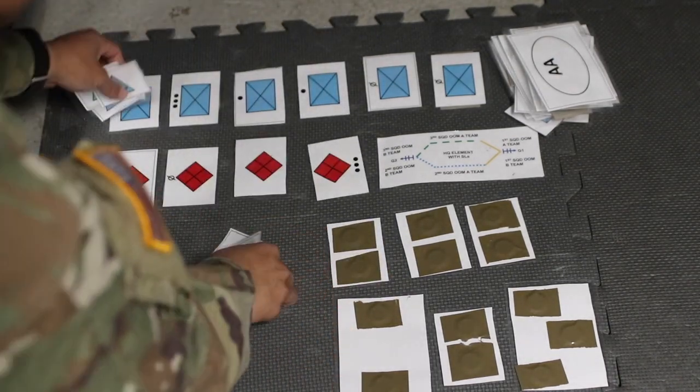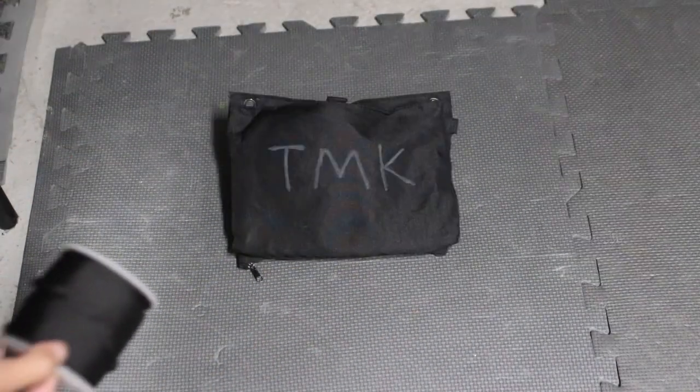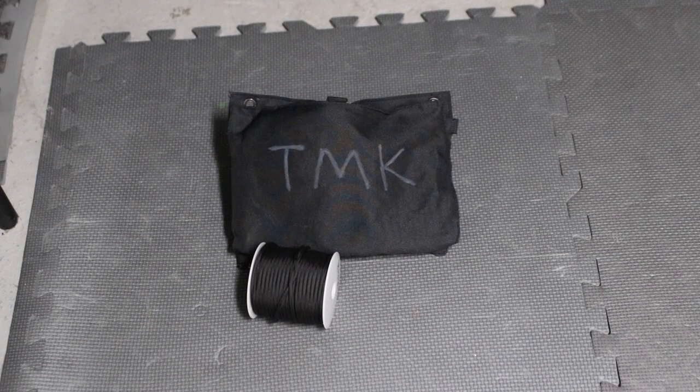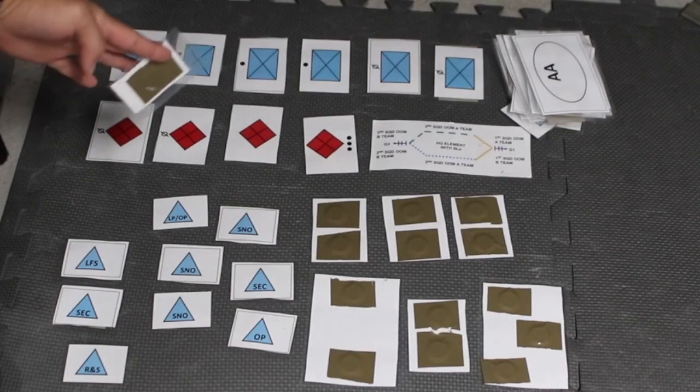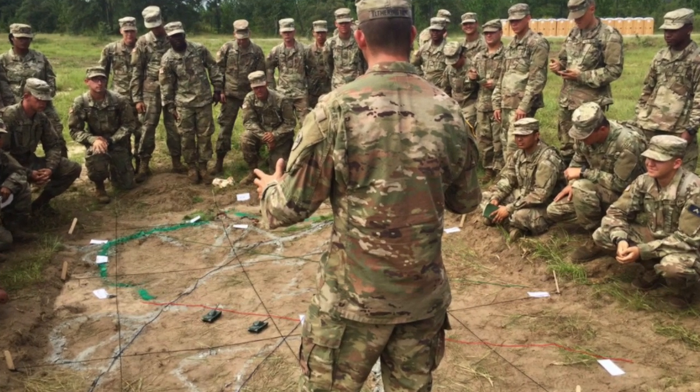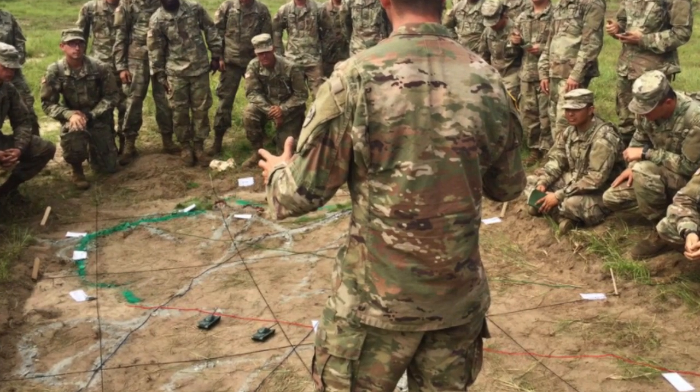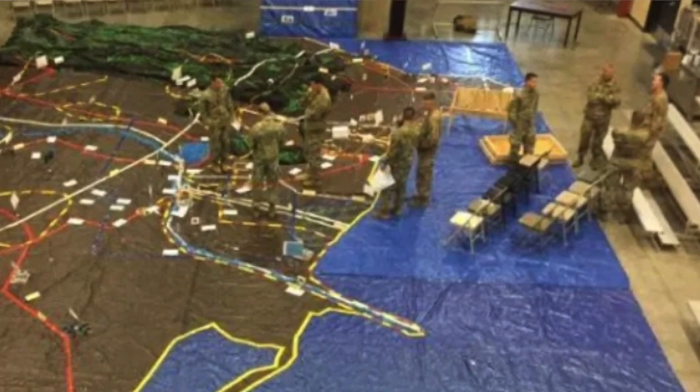To accompany my TMK, always bring some 550 cord. And there you have it guys, I showed you how to make a terrain model kit. In the next video I'm going to show you how to use it and how to brief the terrain model kit with your operations order. I'll catch you guys in the next video.